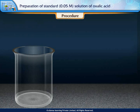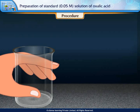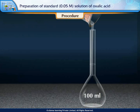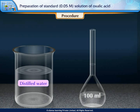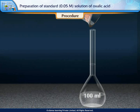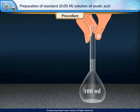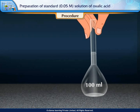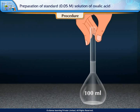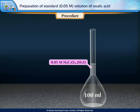Transfer this solution from the beaker into a clean 100 ml volumetric flask. Add distilled water carefully till the 100 ml mark. Shake well. The solution thus prepared is 0.05 molar oxalic acid.